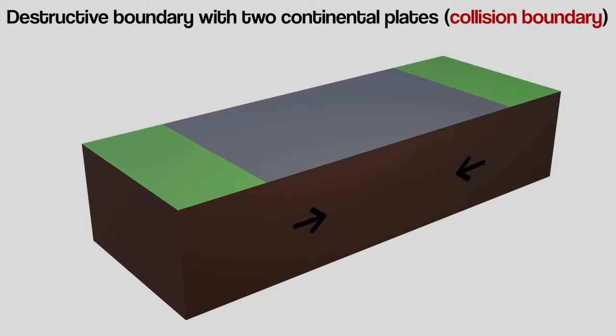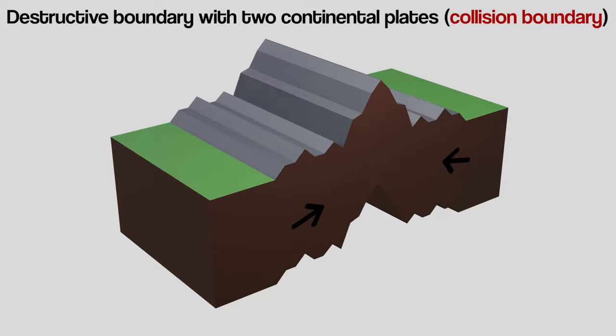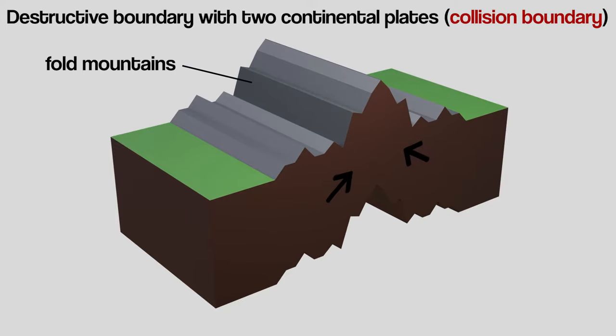The second type of destructive plate boundary is known as a collision boundary. The big difference here is that both of the tectonic plates are continental, so they have roughly the same density. They crash head-on and crumple upwards, creating what we call fold mountains.